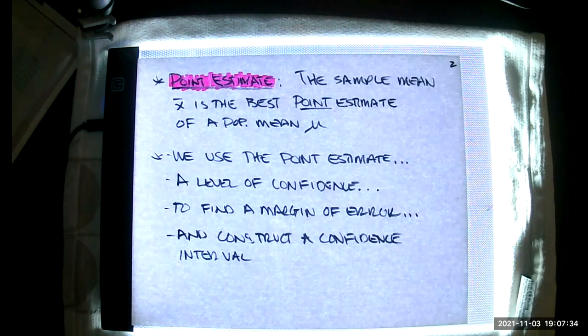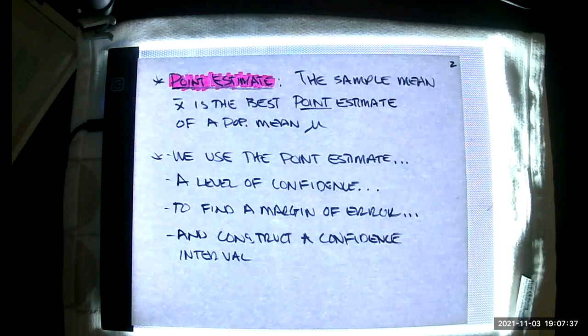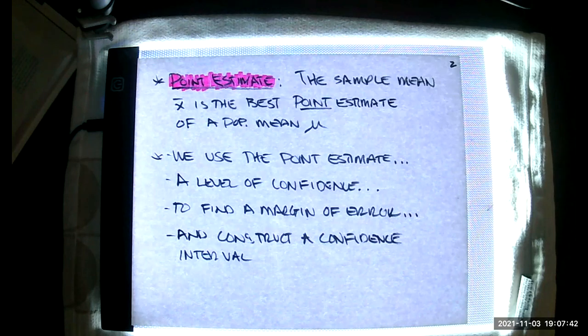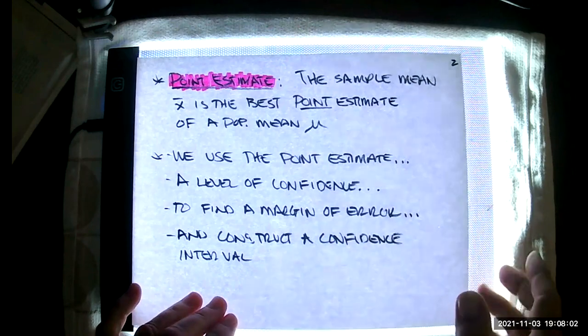We use this point estimate along with a level of confidence. We find a margin of error and construct a confidence interval, very much like we did last night in section 7.1. It's almost entirely the same general procedure. The tools we use are slightly different because we're working with a mean as opposed to a proportion. But in general, the process is really the same. No matter what you attempt to estimate, that's the process.